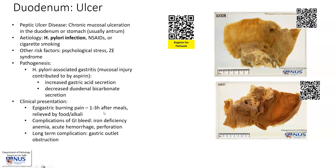Clinically, the patients may present with burning pain in the epigastric region, usually after meals, and this is relieved by food or alkali. They may also have bleeding in the gastrointestinal tract, and if this bleeding is relatively mild over time, this can cause iron deficiency anemia.